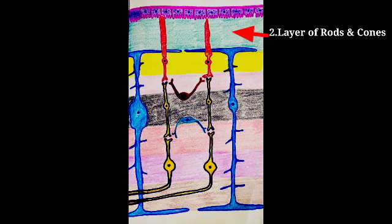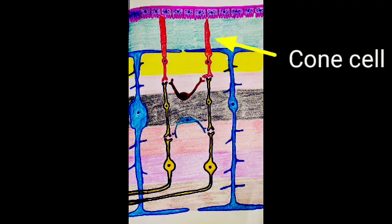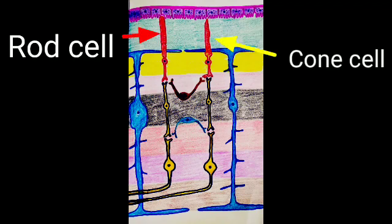Second layer is layer of rods and cones. This layer is just inner to the outer pigmented layer. This layer consists of outer segments of rods and cone cells. The processes of rod cells are cylindrical and that of cone cells are cone shaped. This layer is photoreceptor in function. They can receive the light rays and convert them into nerve impulse form. That is photoreception.